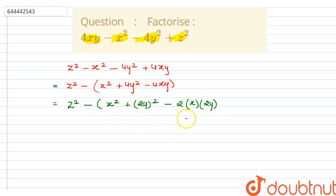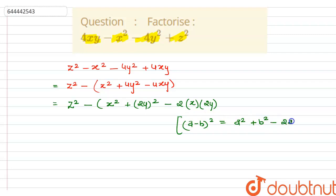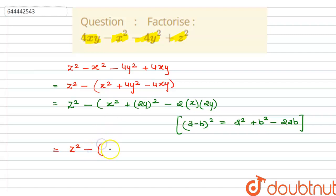From here we can apply the identity: (a - b)² = a² + b² - 2ab. This expression is in the form a² + b² - 2ab, so by this identity the whole term becomes z square minus (x minus 2y) whole square.